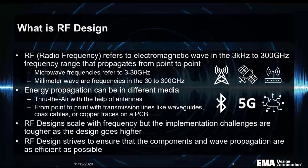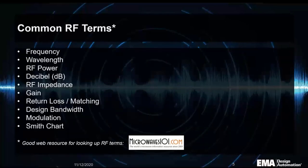RF design is basically striving to ensure that components and wave propagation are as efficient as possible. There are many RF terms to know — frequency labeling, RF power in decibels or dBs, gain, return loss, modulation, and Smith charts. Good resources for learning these include Wikipedia, RF Cafe, Microwaves and RF Magazine, and especially Microwaves101.com, which is an ad-free site put together by an RF engineer that Jim highly recommends.